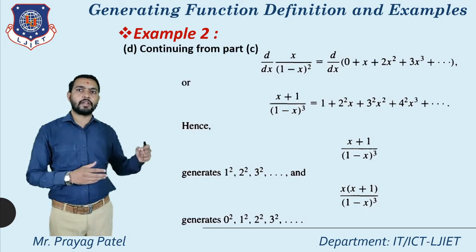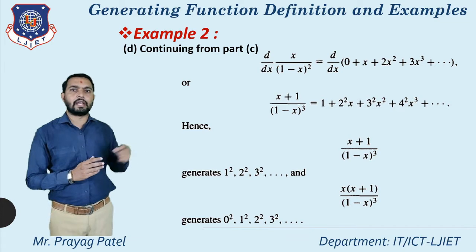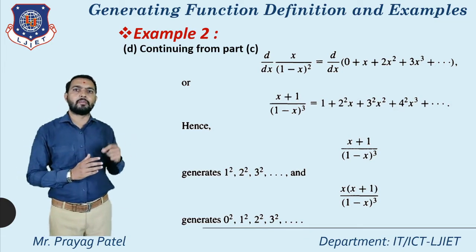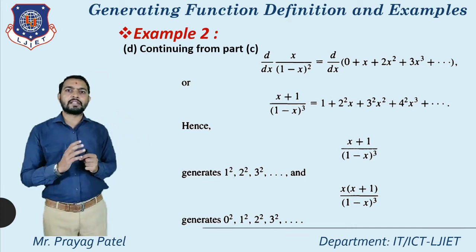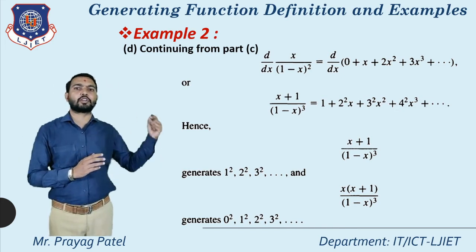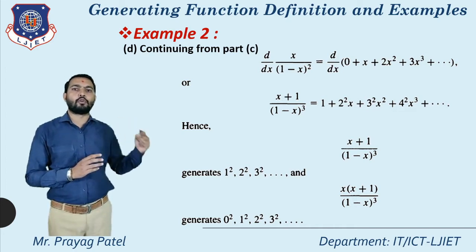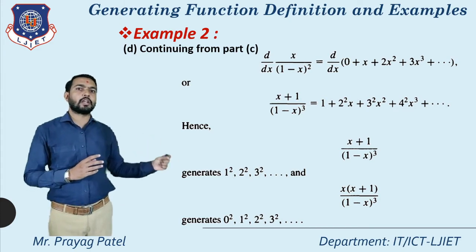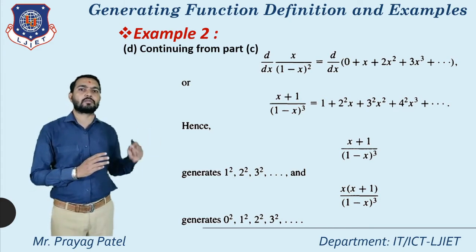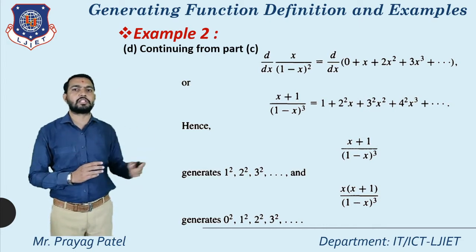Part d: Continuing from part c, applying d/dx to x/(1-x)², we get (x+1)/(1-x)³ = 1 + 2²·x + 3²·x² + 4²·x³ + ... So (x+1)/(1-x)³ is a generating function for the sequence 1², 2², 3², 4², ... For the sequence starting at 0², 1², 2², 3², the generating function is x(x+1)/(1-x)³.